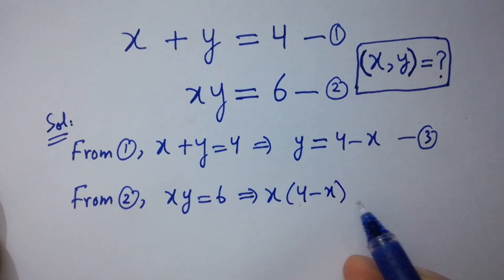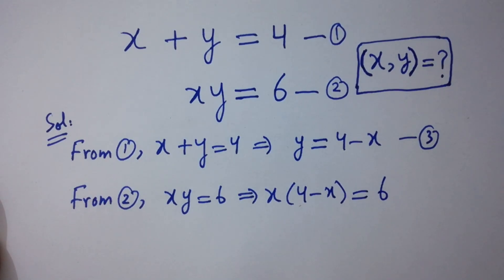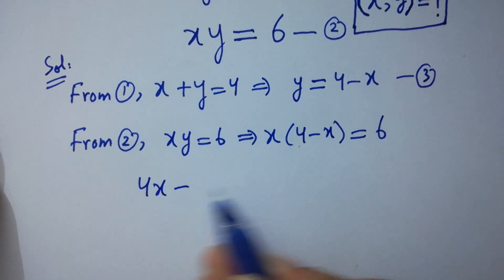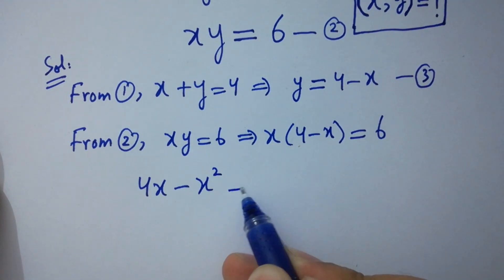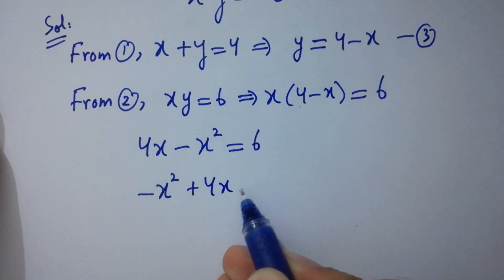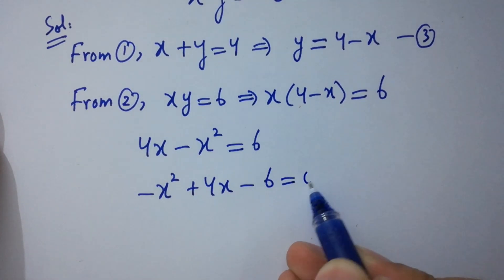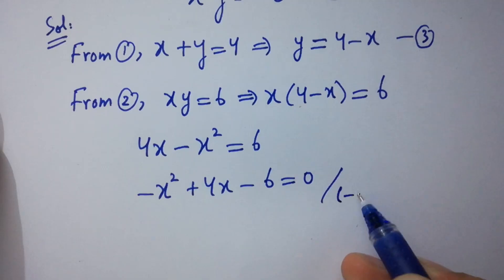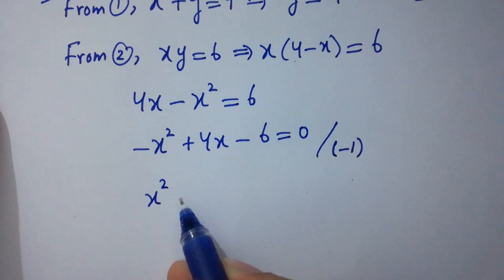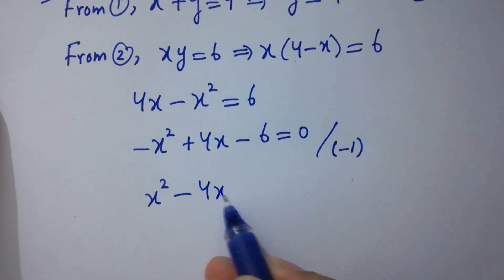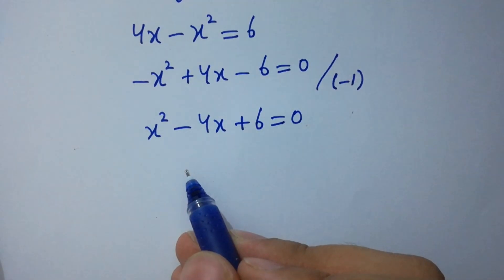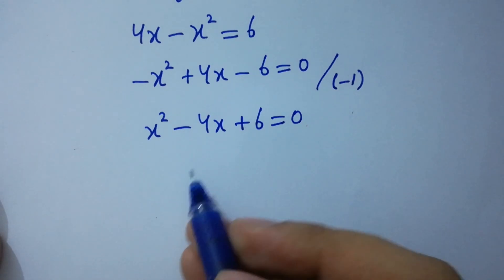We have x times (4 minus x) equals 6, which gives 4x minus x² equals 6, so negative x² plus 4x minus 6 equals 0. Dividing both sides by minus 1, we get x² minus 4x plus 6 equals 0. This is our quadratic equation.